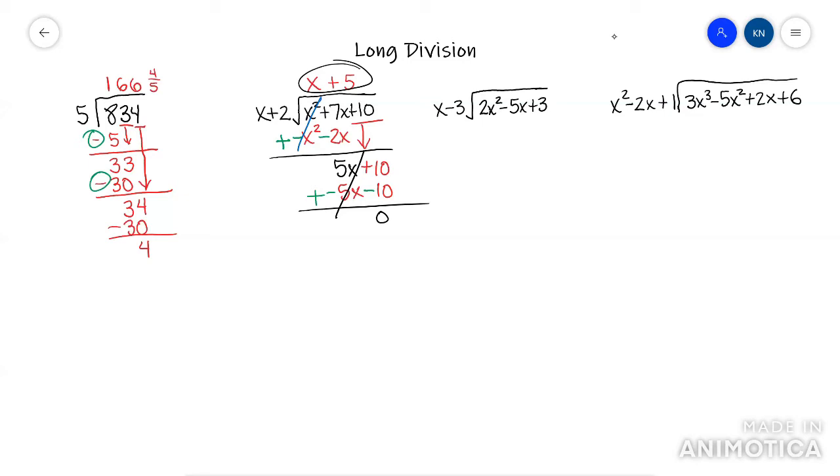This next one. First term divided by first term. 2X squared divided by X is 2X. Distribute and multiply this. You would get 2X squared minus 6X.